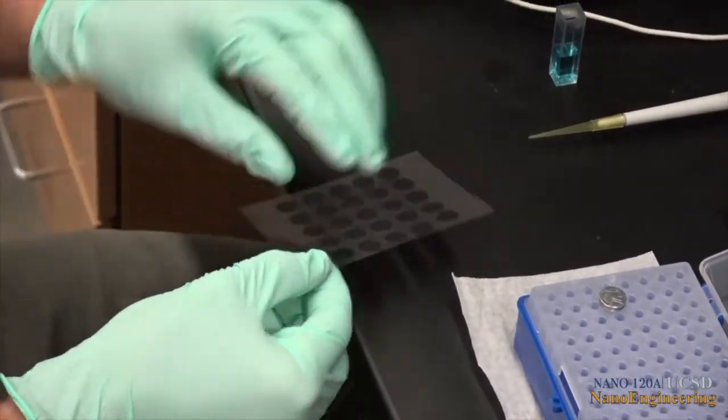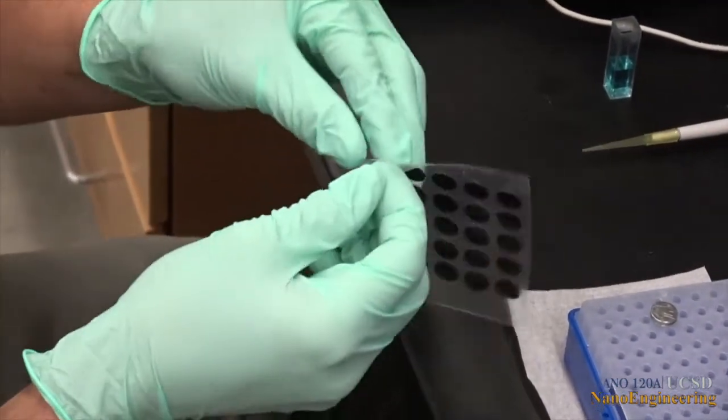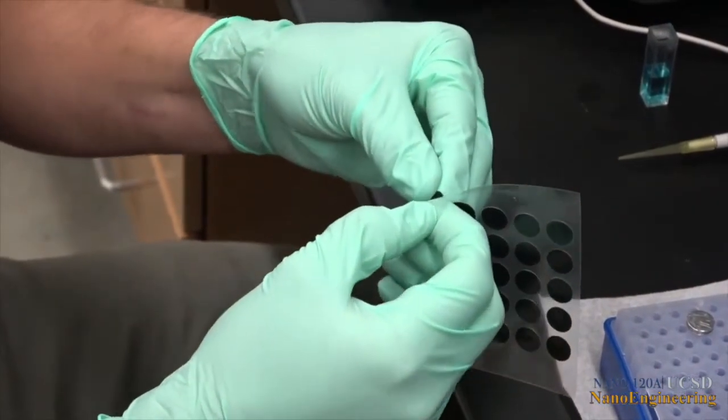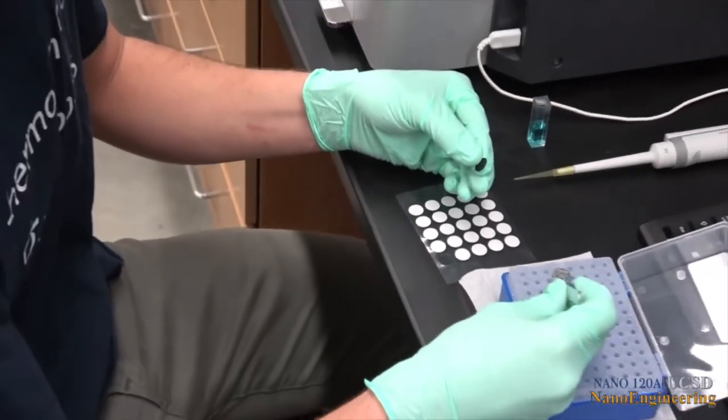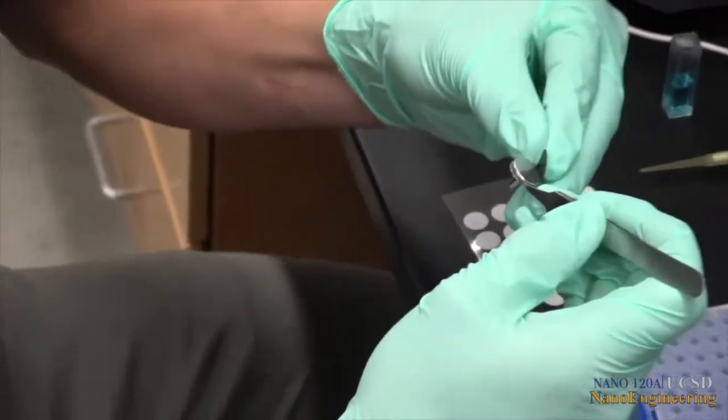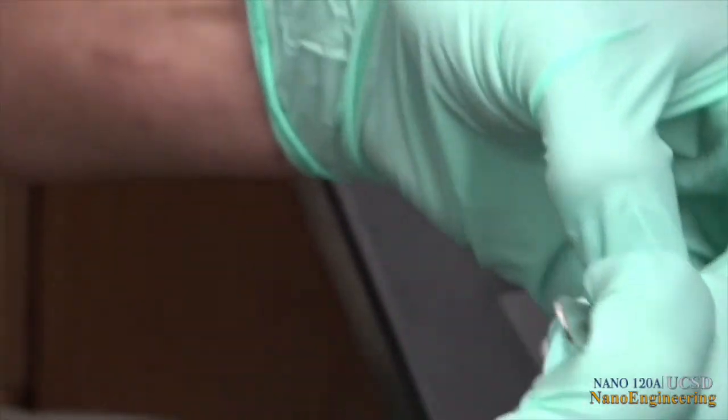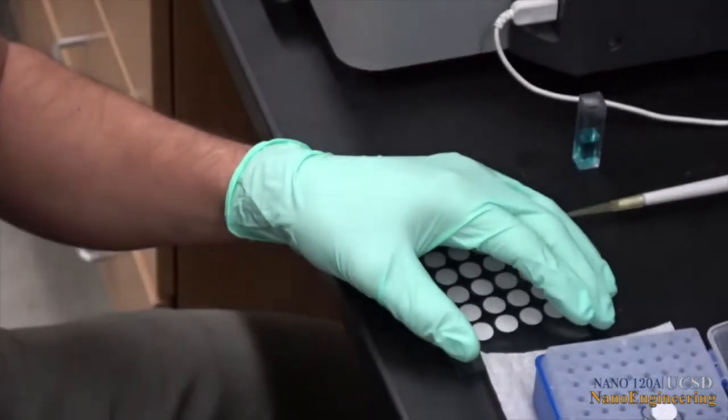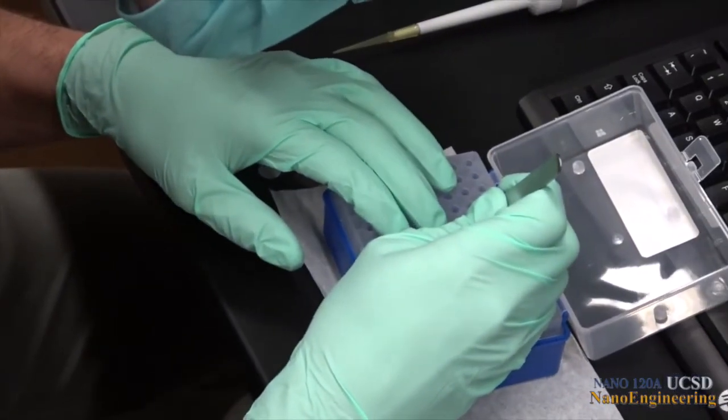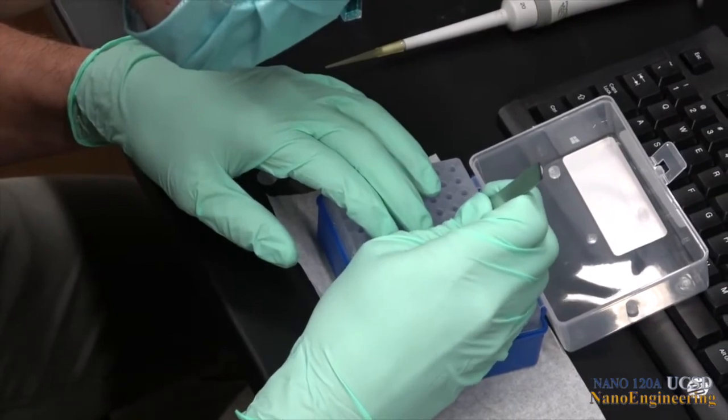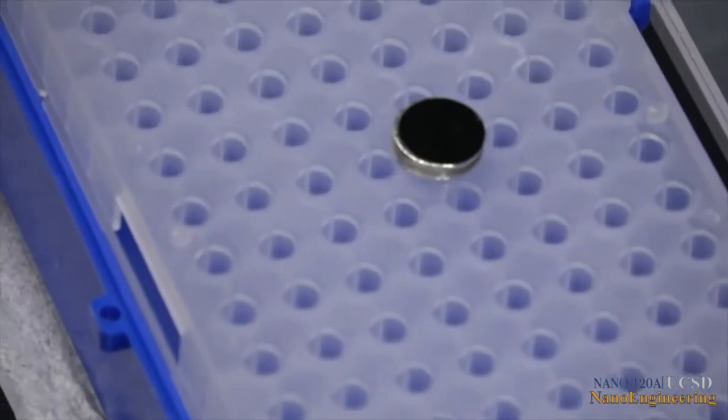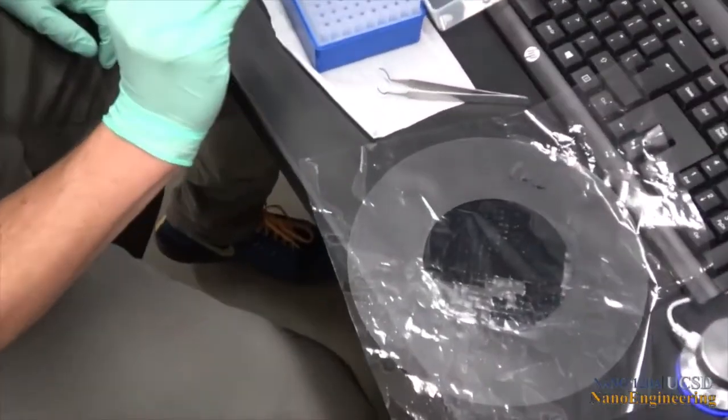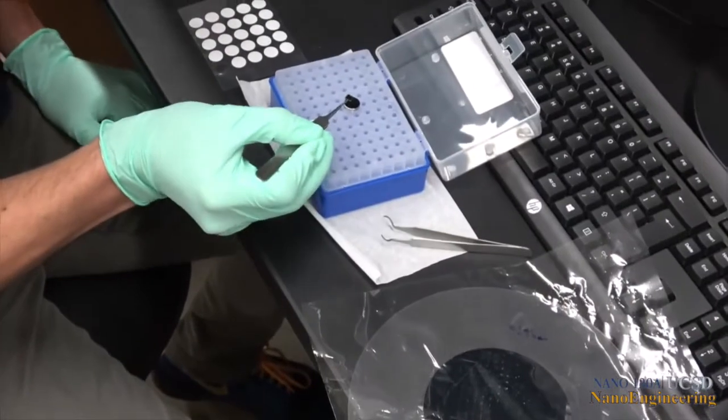Since many of the samples to be prepared for the nanolab are obtained from colloids, we will show a brief sample preparation for this case. First, secure a piece of the black carbon tape to an SEM specimen mount. Next, place a piece of silicon on the carbon tape.